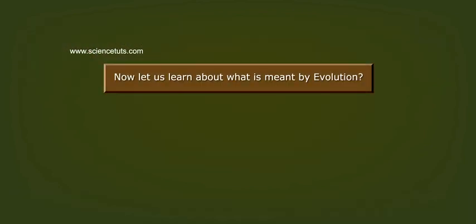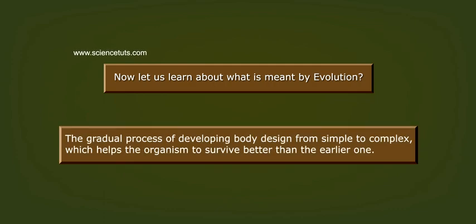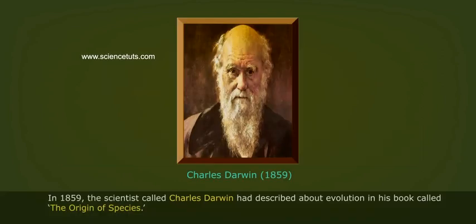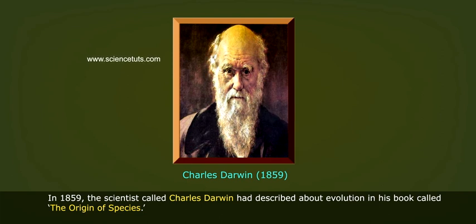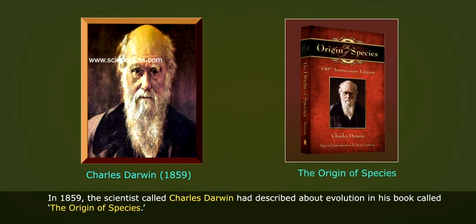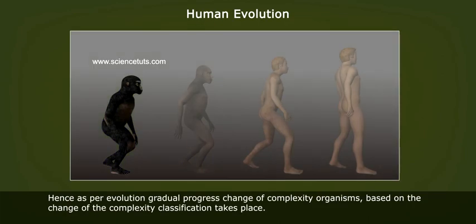Now let us learn what is meant by evolution. Evolution is the gradual process of developing body design from simple to complex, which helps the organism to survive better than the earlier one. In 1859, the scientist Charles Darwin described evolution in his book called 'The Origin of Species.'